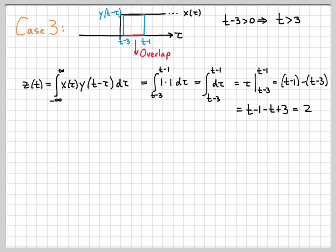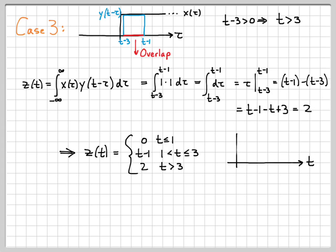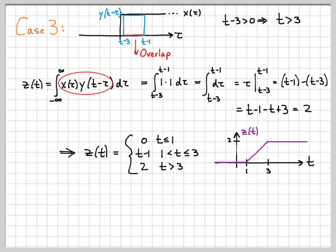Piecing all three cases together: z of t equals zero for t less than or equal to one; it equals t minus one for t between one and three; and it equals two for times greater than three. Sketching z of t, it is zero up to t equals one, ramps up linearly between one and three, and then holds a value of two for all times greater than three. The key to working a convolution integral is being able to sketch x of tau and y of t minus tau accurately for all the different cases of t, figure out where they overlap, and then evaluate the integral.